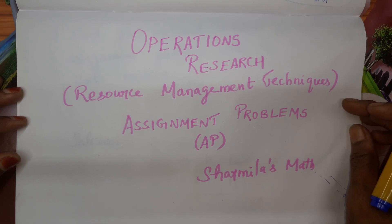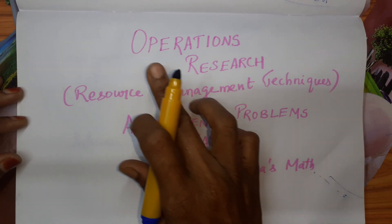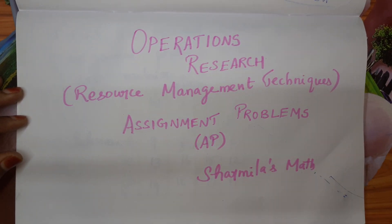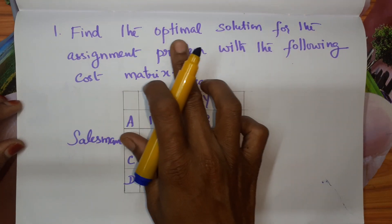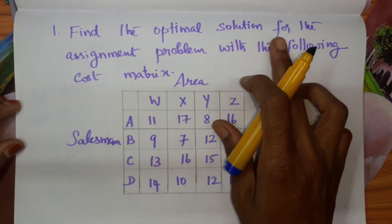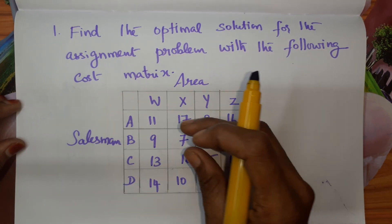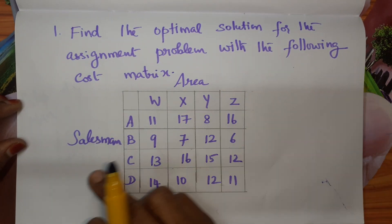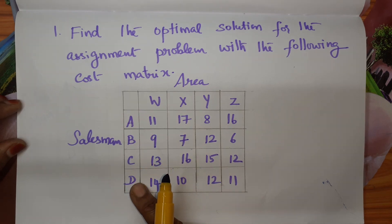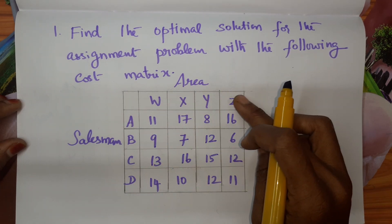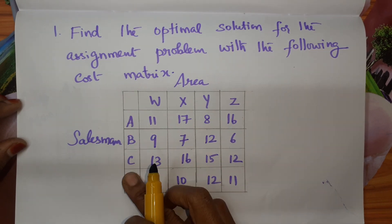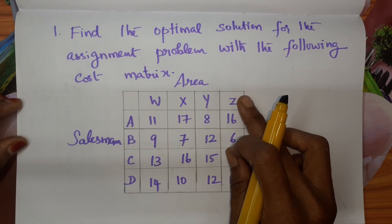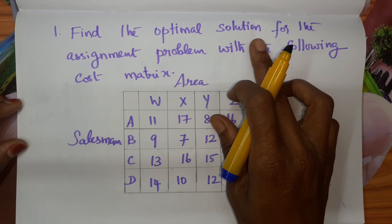Hello students. In this video we are going to see about assignment problems in operations research. We have to find the optimal solution for the given assignment problem with the following cost matrix. There are 4 salesmen and 4 different areas, and we are going to assign all 4 salesmen to different areas in such a way that we get the optimal solution.